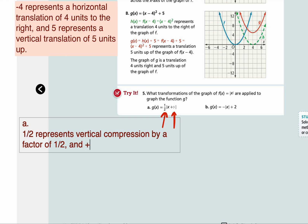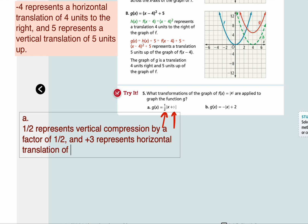And positive 3 is inside the function, so you're changing x values — it's a horizontal translation. Remember, horizontal translation is represented as x minus a number. So if the number is positive, you have x minus that positive number. So plus 3 represents a horizontal translation of 3 units to the left.